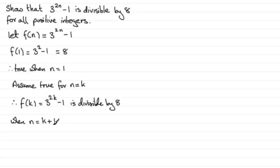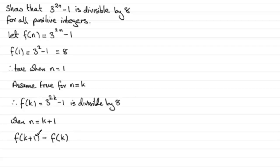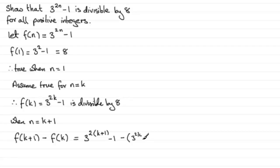On this basis we consider when n equals k plus 1 and we've got to show that this is going to be divisible by 8. When doing these divisibility tests what we always look at is f(k+1) minus f(k). Substituting for f(k+1) by replacing n with k+1, we get 3 to the power 2(k+1) minus 1, and then minus f(k), which is minus the quantity 3 to the power 2k minus 1.